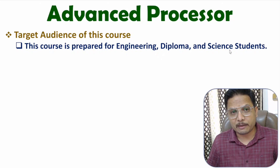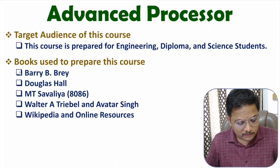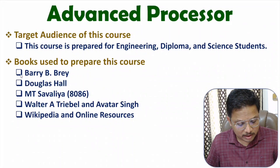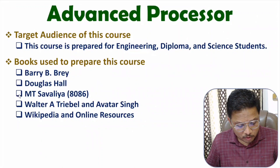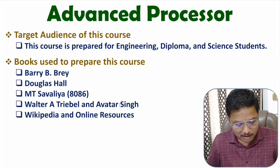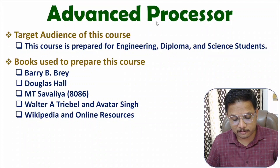To prepare this course, I have used four interesting books. First book is of Barry B. Bray. Second book is of Douglas Hall. Third book is of M.T. Savalya. And fourth book is of Walter A. Tribble and Avtar Singh. I have also used Wikipedia and online resources to prepare this course on advanced processor.